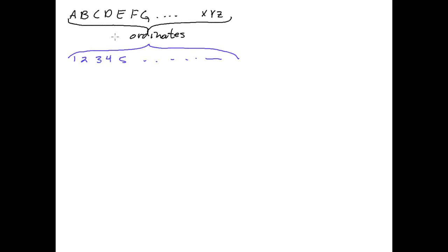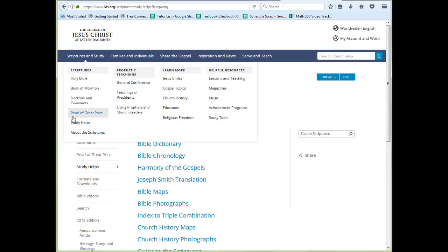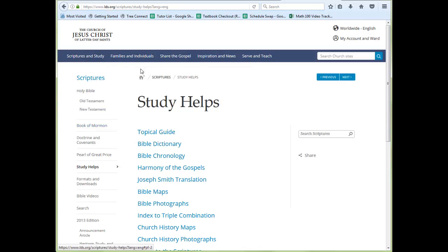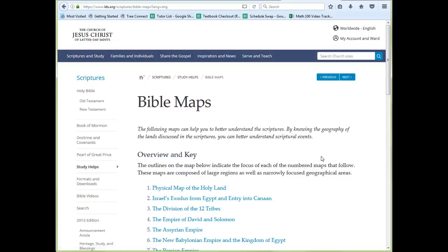Ordinates are essential in most things we do in math. We're going to start off this chapter by teaching you about graphs and maps and charts by going to lds.org and seeing how these ordinates are used together. Here we are on lds.org in the study help section. We can go to Bible maps or church history maps. Let's look at the Bible maps.